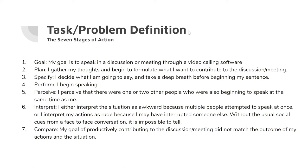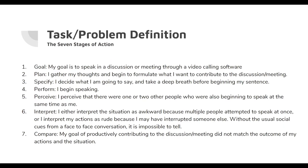Here are the seven stages of action for our problem. Imagine I'm in a video call. My goal would be to speak in the discussion through the calling software. For my plan, I would want to gather my thoughts and decide what I want to contribute to the meeting, specify what I'm going to say, and take a deep breath before beginning my sentence.